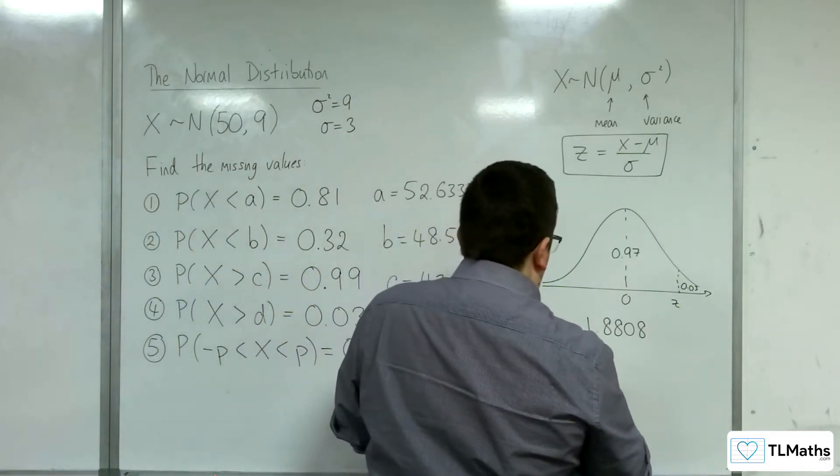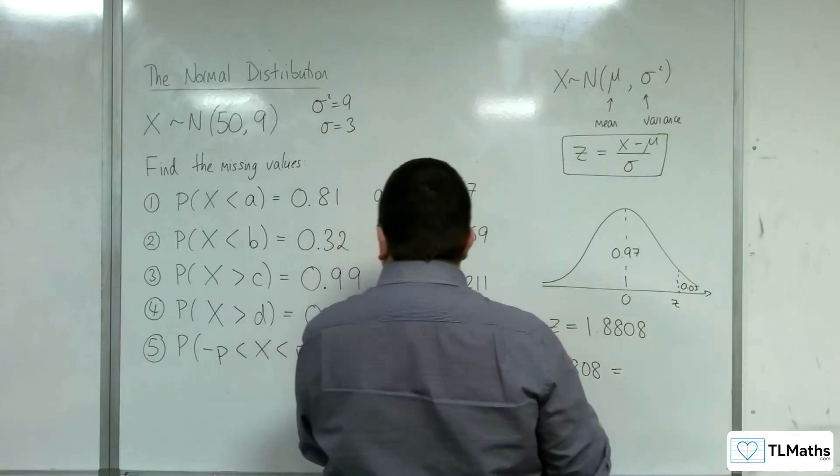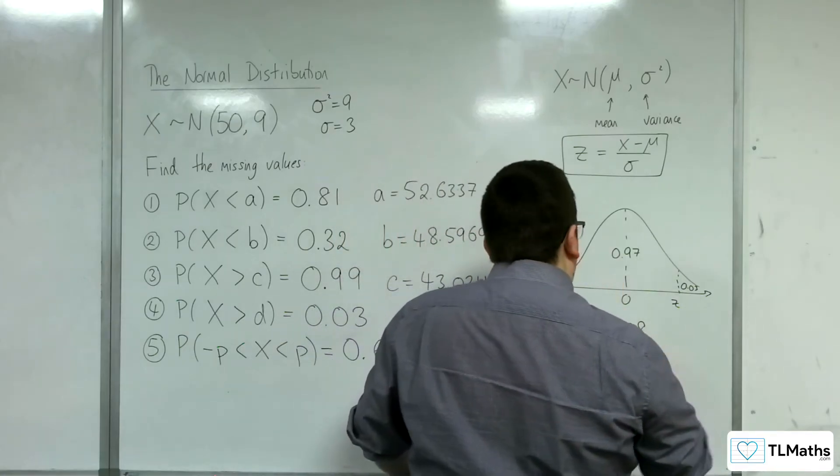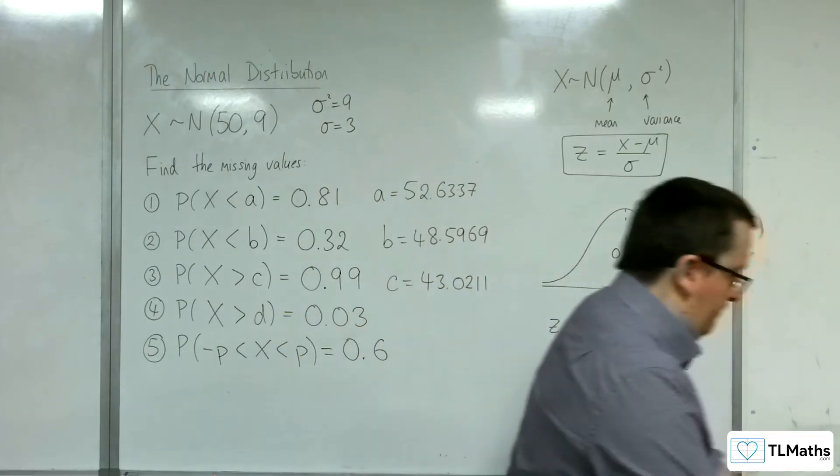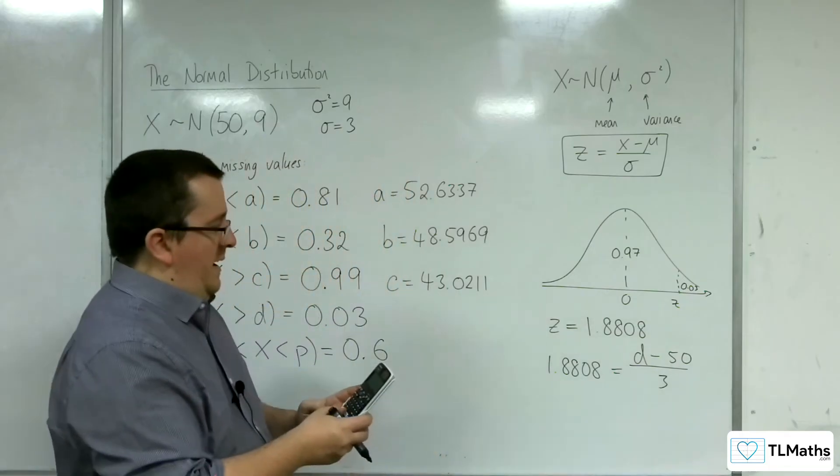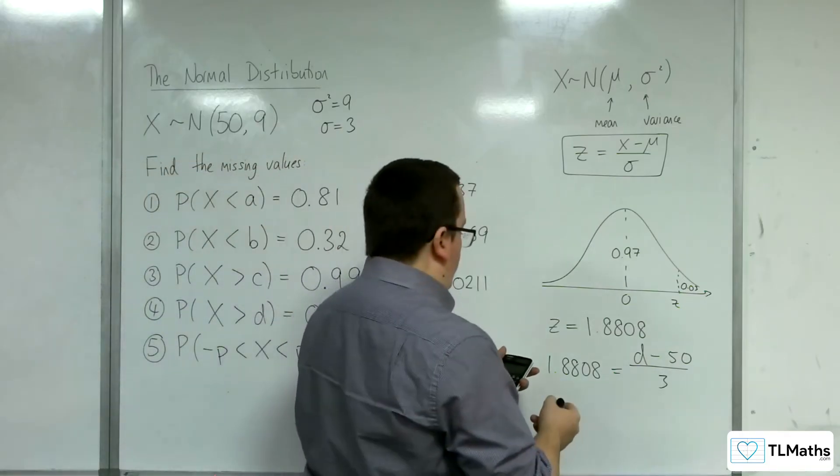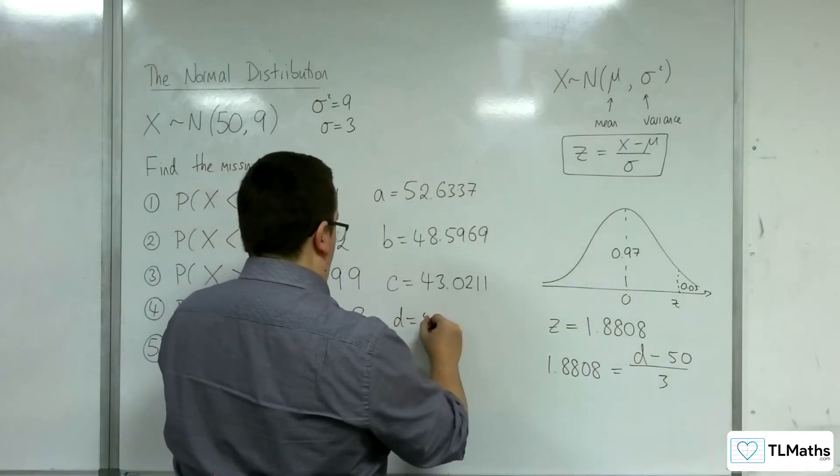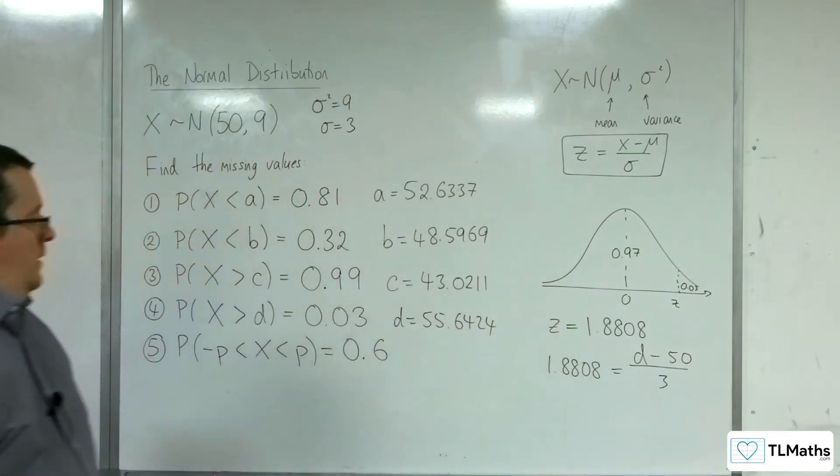That's the minus z value. So 1.8808 is equal to the x value, which is d, take away the mean, divided by the standard deviation. So 1.8808 times by 3, add 50, is 55.6424.